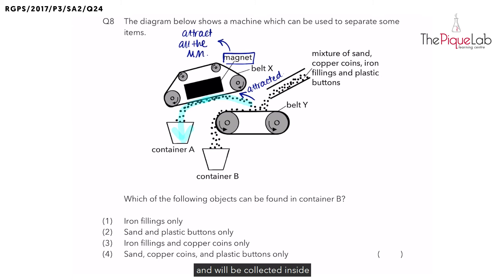They are magnetic materials. So all the magnetic materials will be attracted to the magnet in belt X and will be collected inside container A. And how about container B? What would be collected in container B? Yes, all the non-magnetic materials. Why? Because all the non-magnetic materials will not be attracted to the magnet. Hence what will happen to them? They will just fall onto belt Y and they will be collected into container B.